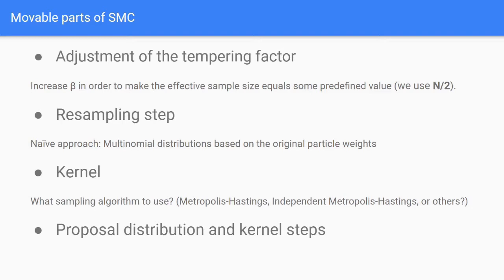We want to make clear that the SMC algorithm is not set in stone. There are in fact a lot of moving parts that can be tweaked, and tweaking these may or may not improve the sampling. To name a few, we have the method by which the tempering factor is adjusted. The PyMC3 implementation adjusts the tempering factor in such a way that the effective sample size equals some predefined value, but other methods of adjusting this tempering factor have been proposed in literature.